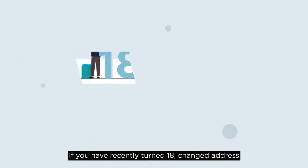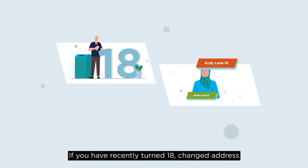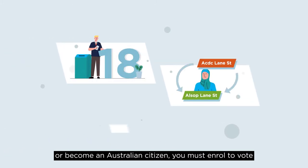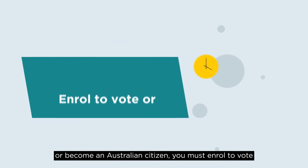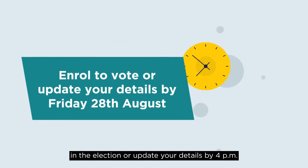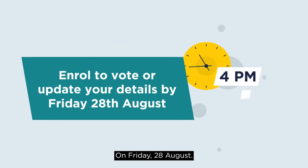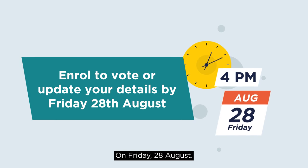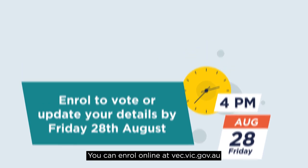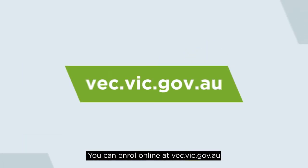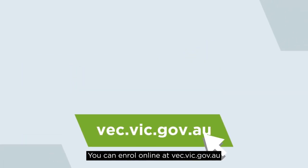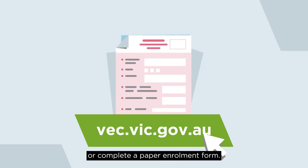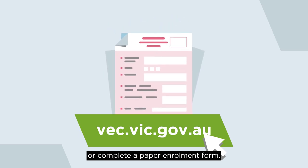If you have recently turned 18, changed address, or become an Australian citizen, you must enrol to vote in the elections or update your details by 4pm on Friday 28 August. You can enrol online at vec.vic.gov.au or complete a paper enrolment form.